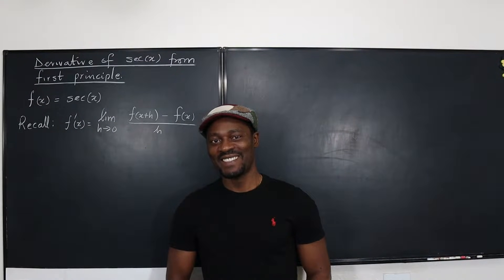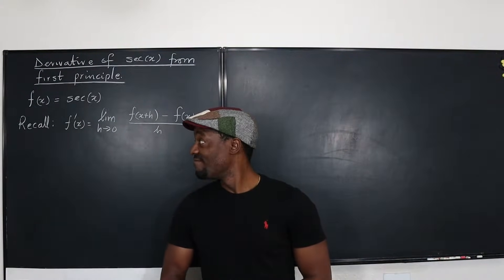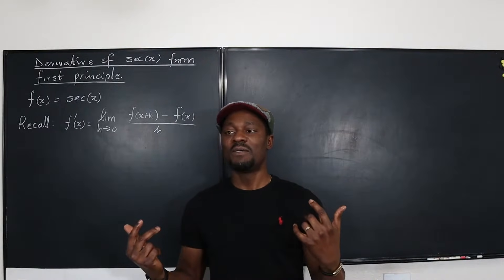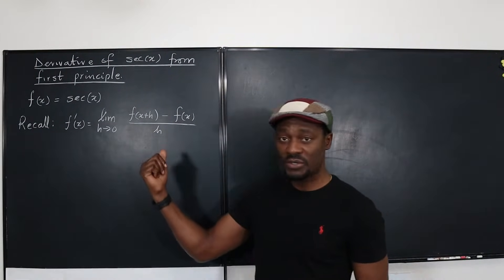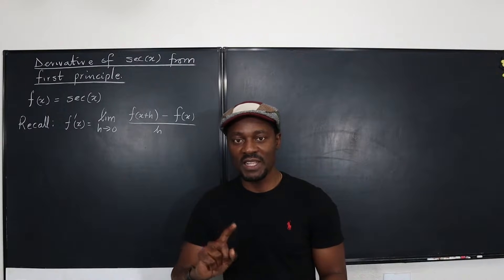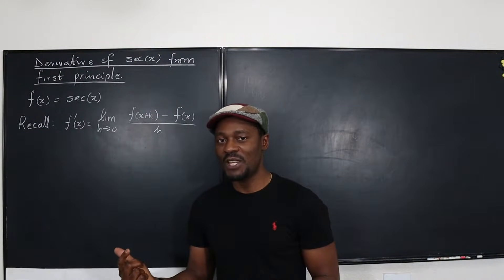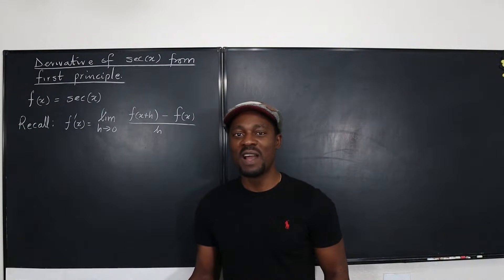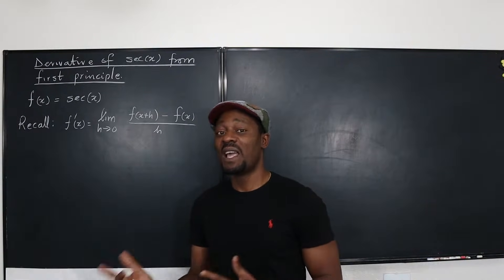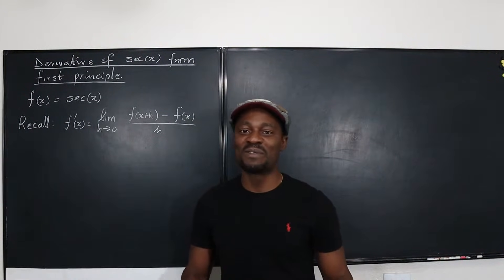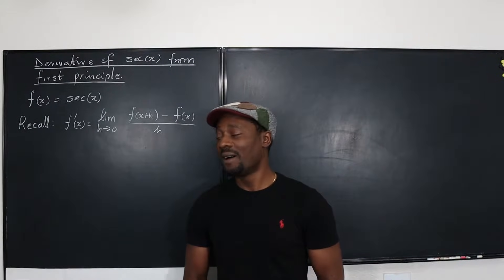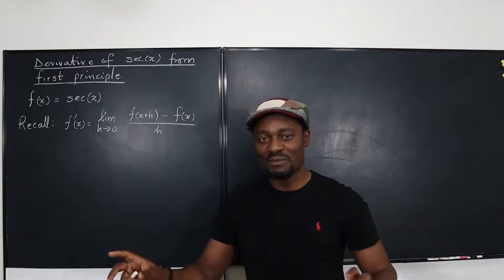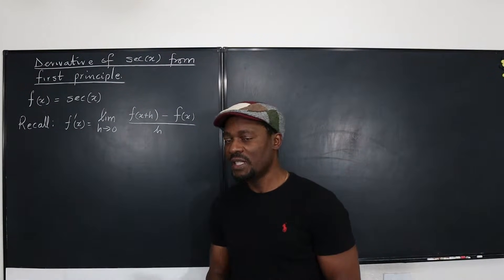Hello, welcome to another video. This is still in the series of all trig functions getting their derivatives from first principles, from the definition. I already did sine, cosine, and tangent, and this is secant. The other videos will be cosecant and cotangent. Every time I make an attempt, I think it would be like the other one, but there's always a different thing to apply. Sometimes you have to combine a lot of things to get your answer. So let's get into this one.